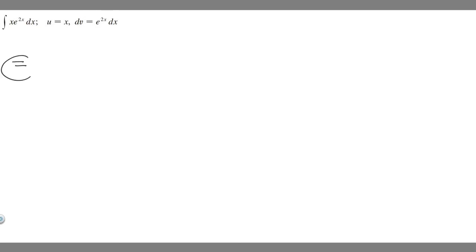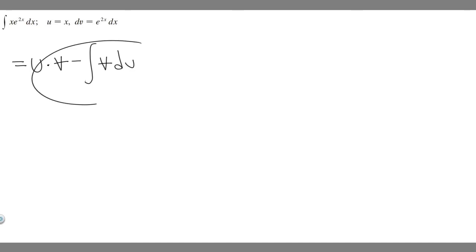In order to solve this problem, you need to know the formula for integration by parts. It's going to be equal to u times v minus the integral of v times du. This is the formula we're going to use to solve, and notice how we're given u and we're given dv.